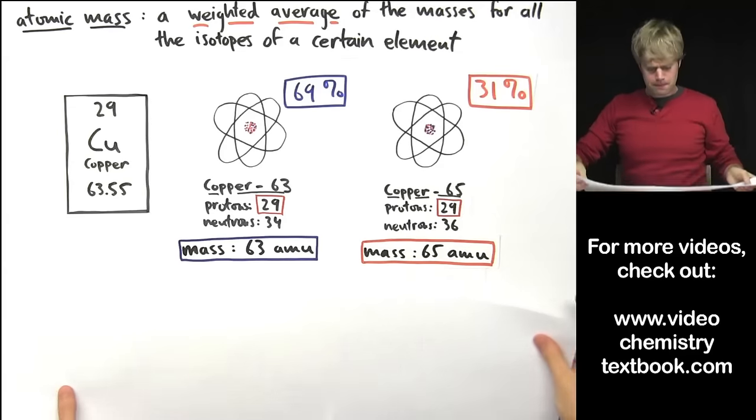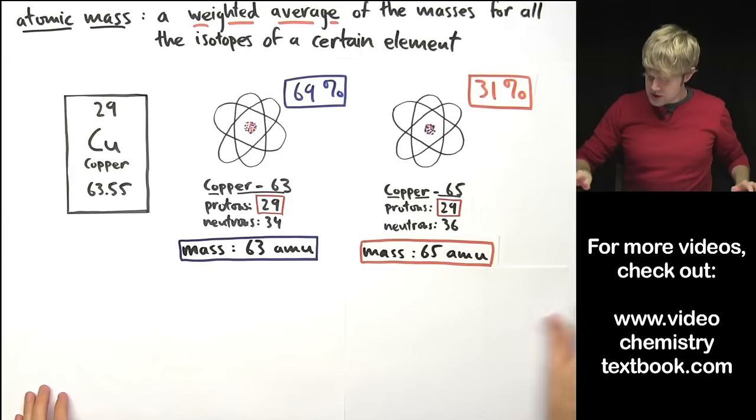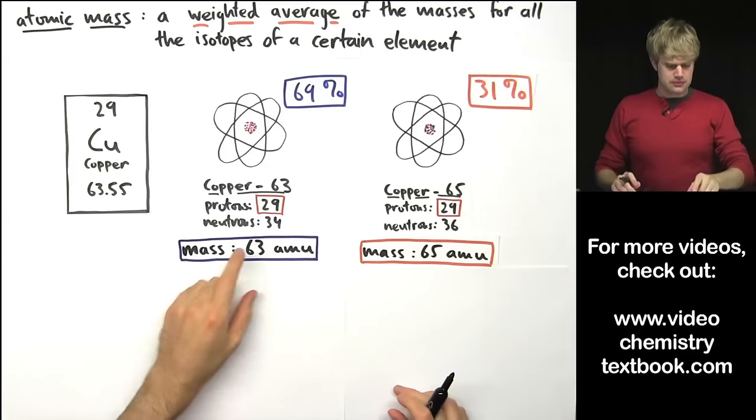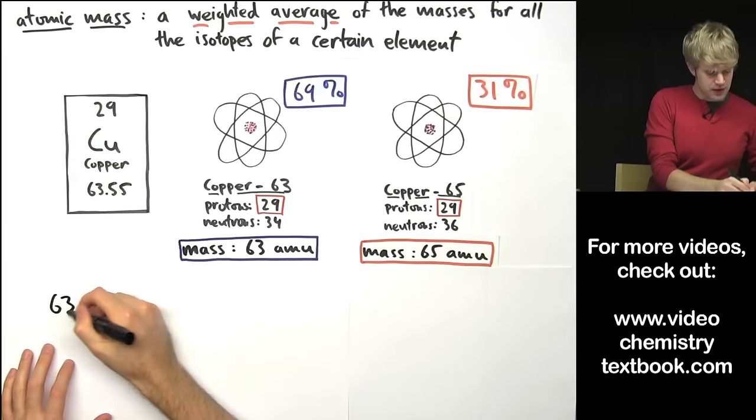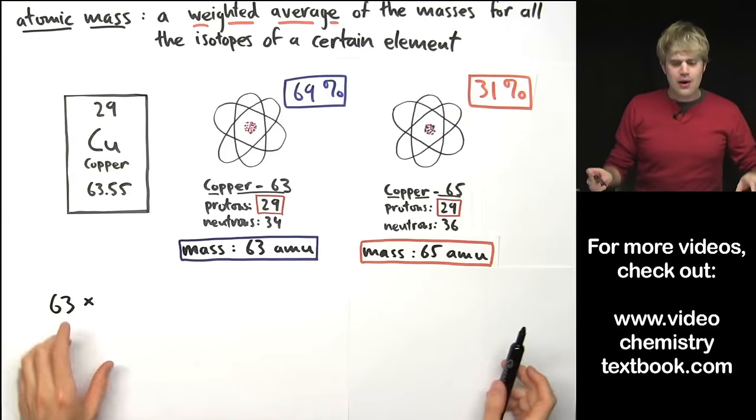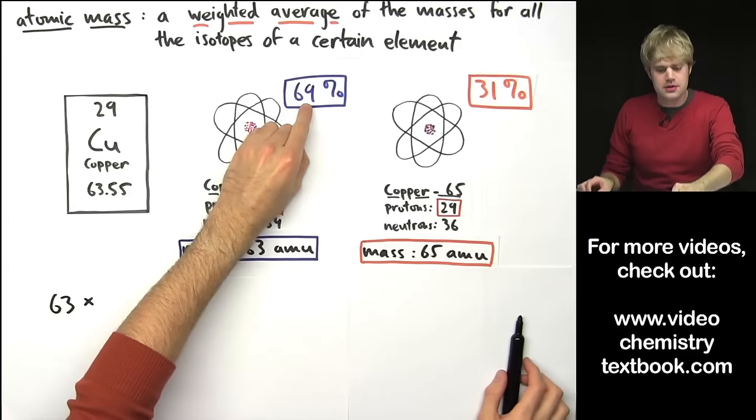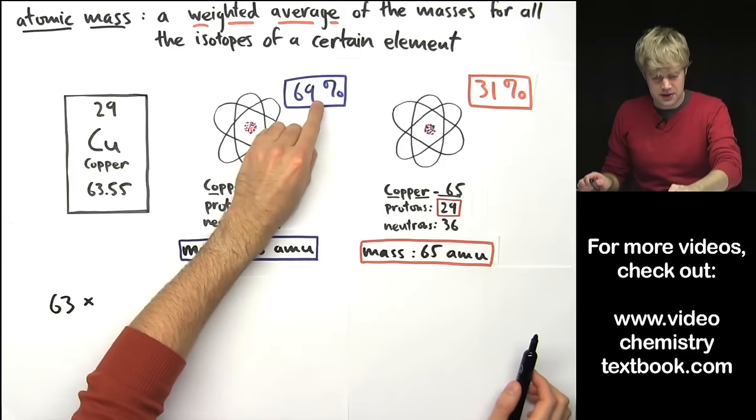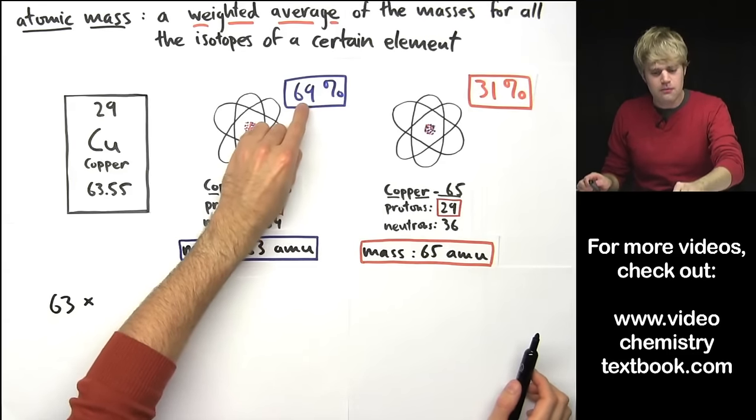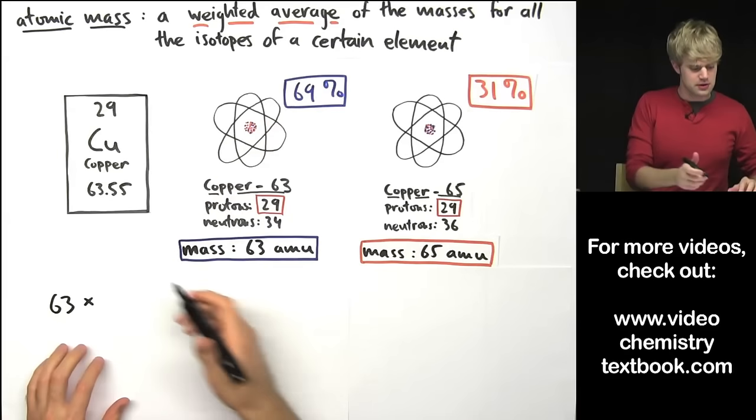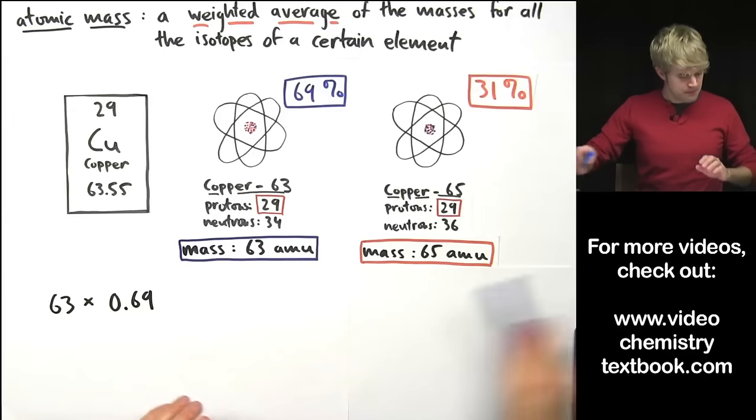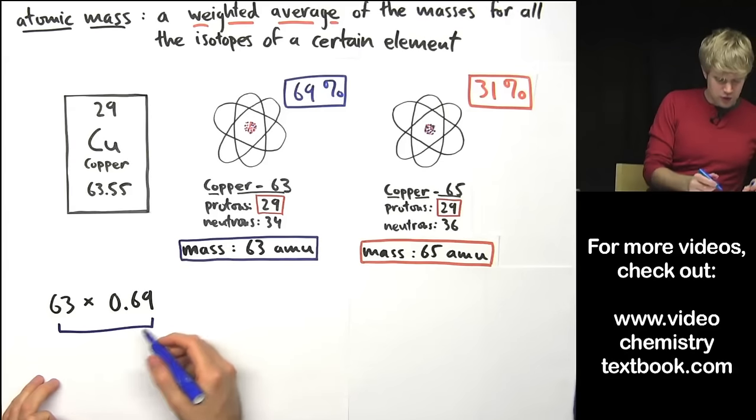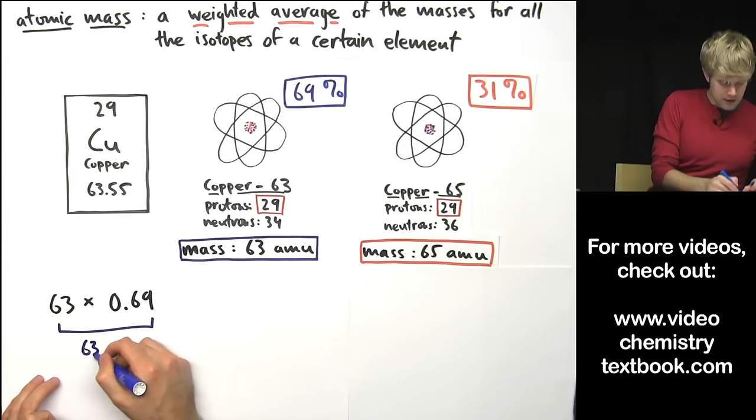Remember how we did it with a Lamona? What we do is we start with the mass. So copper-63, I'll do 63 AMU. Now I multiply that by its abundance expressed as a decimal. 69%, move the decimal place two spots to the left and I have 0.69. And this expression right here is for copper-63.